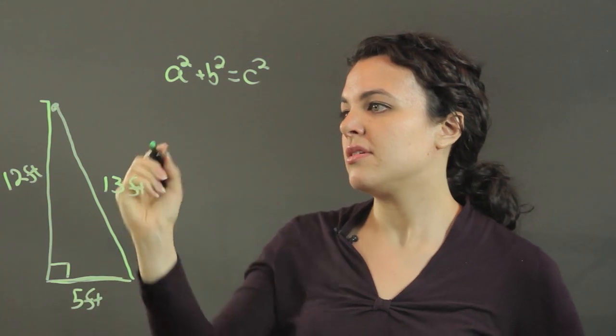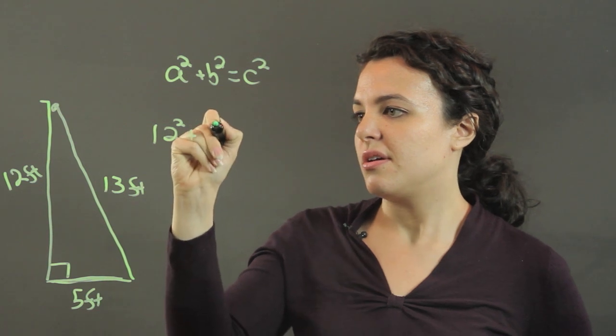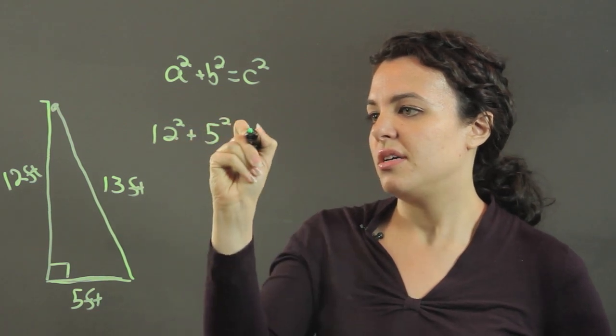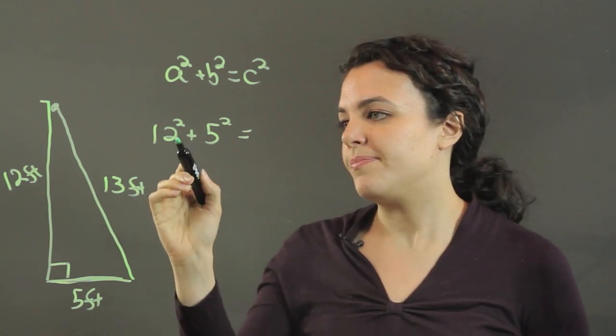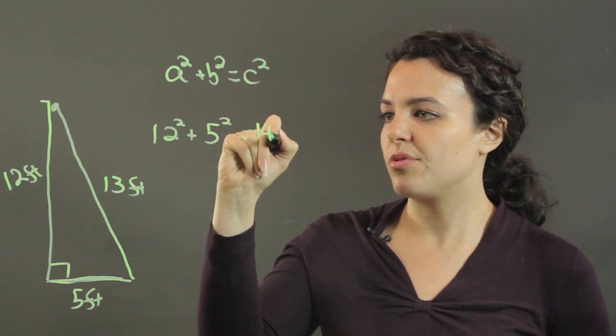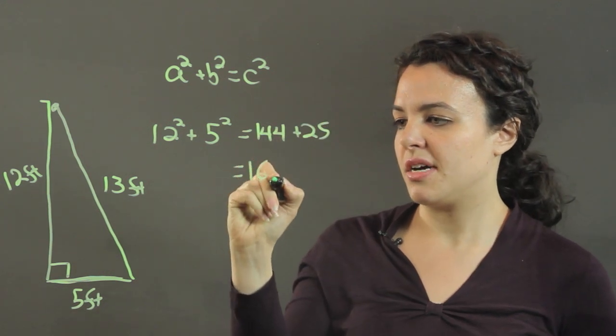Where a and b are the legs. So, 12 squared plus 5 squared equals... Let's see what it equals. 144 plus 25, that equals 169.